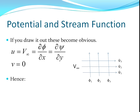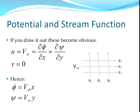By rearranging this with some simple integration, we get that phi equals v infinity times x, and the stream function is v infinity times y. And if you look at this diagram, that's very obvious. When you're changing the equipotential surface — moving from this to this — you're changing x. And when you're moving up to the next streamline, you're moving in y. That's why the stream function is in terms of y and the potential function is in terms of x.